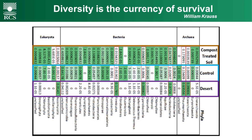Across the top line is compost-treated soil, again with the right compost in very low doses — you'll see a whole lot of green, meaning the population of those particular organisms is at quite a high level. The next one down has quite a lot of white space — that's the control, with crops grown but no compost. The bottom line is the desert soil with no crops ever grown in it — very little green, so the population of bugs is very, very low. The fascinating thing is that the bugs in that desert soil are not present when the soil is healthy.